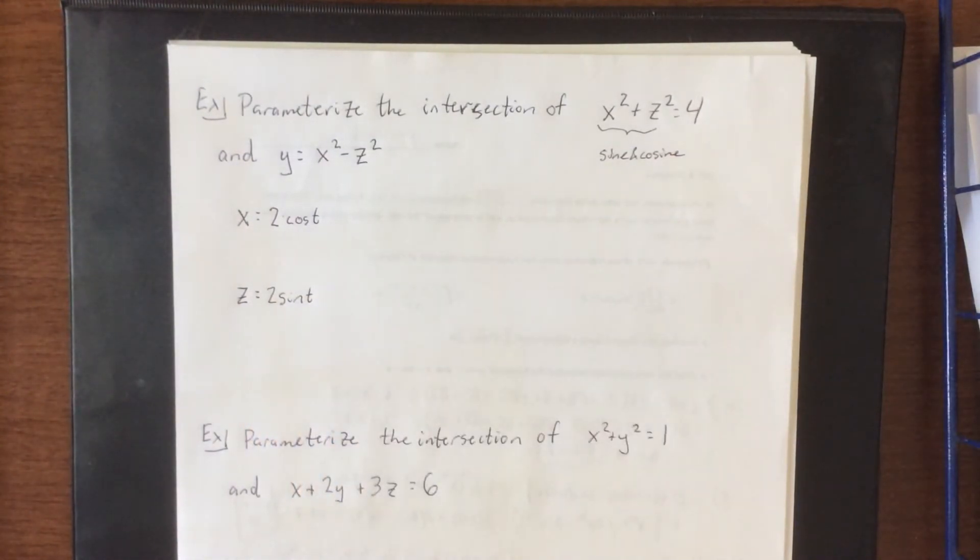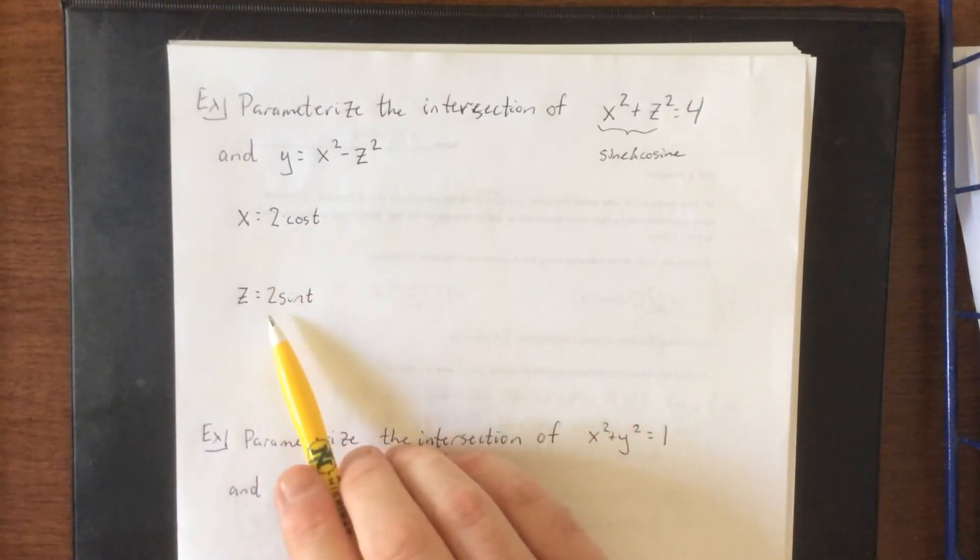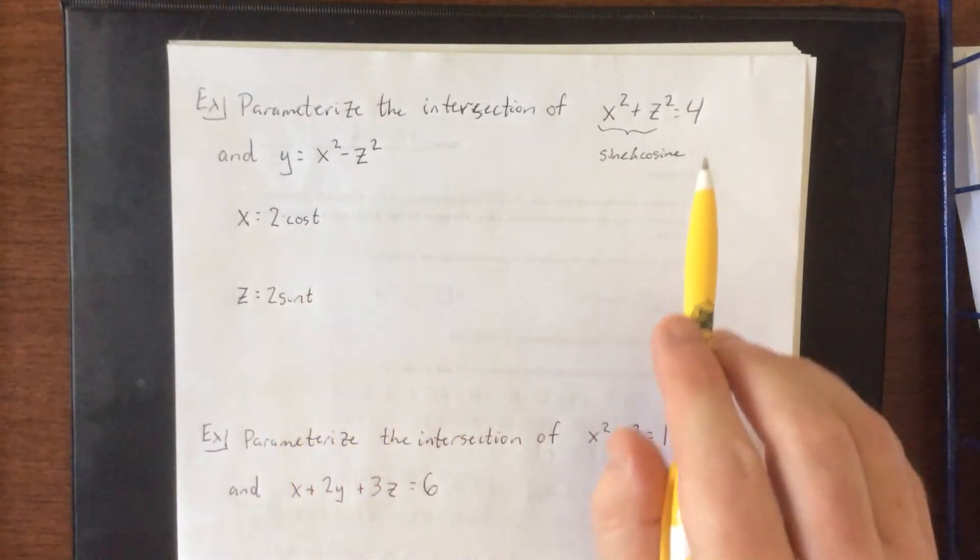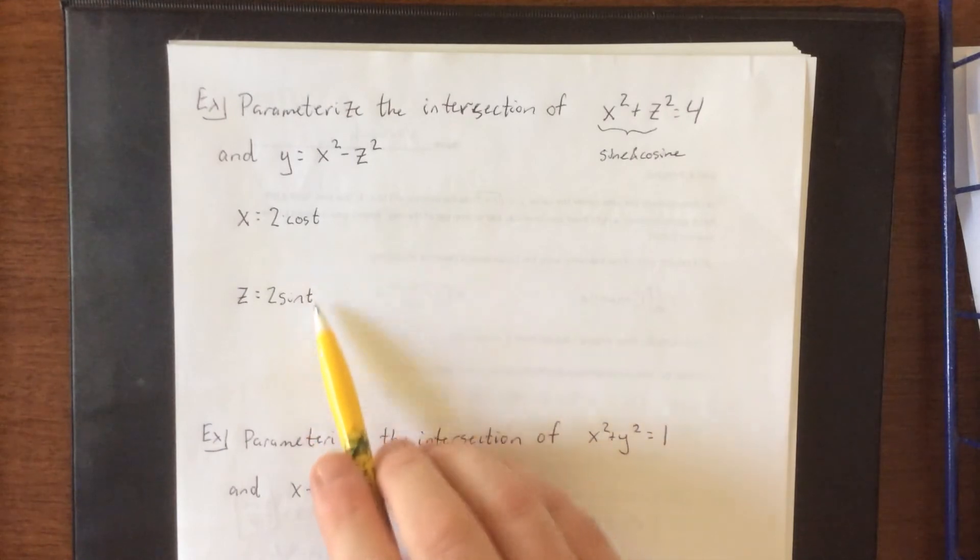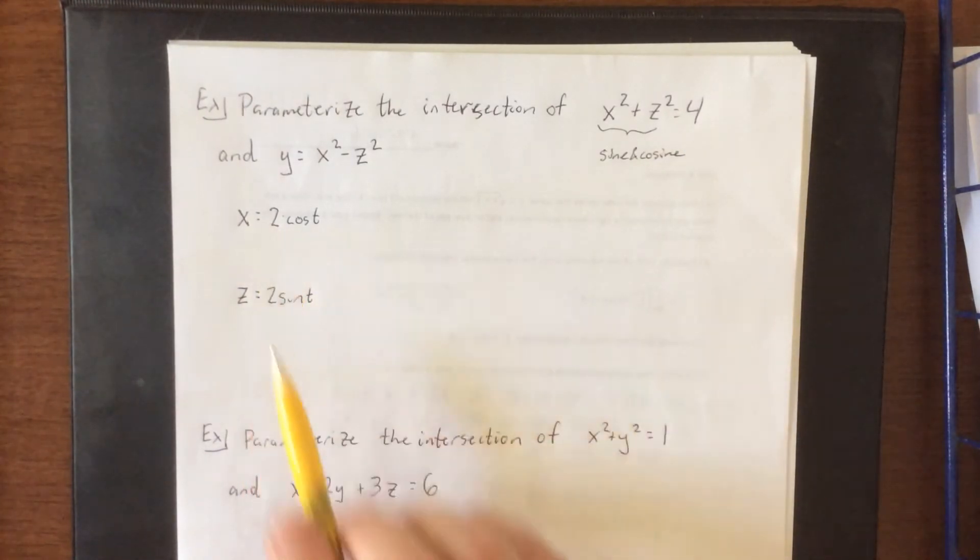So really, I guess what I did there was a conversion into polar, where I let one of the variables be equal to r times the cosine of your variable, and the other r times the sine of the variable. Variable in this case is going to be t, that's our parameter, and the radius of this circle is four, which is why I use r equals two.